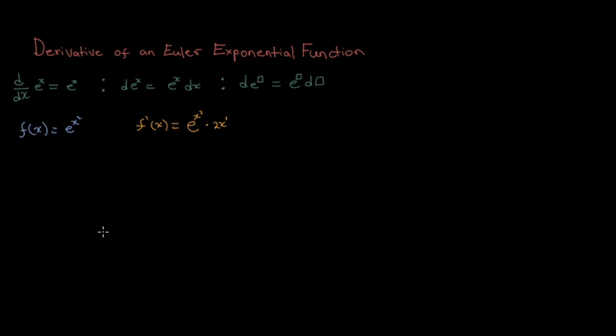And of course you can go ahead and simplify it even further by just getting rid of the 1 because you don't necessarily need to put that on there. So e to the power of x squared times 2x, and that's it.